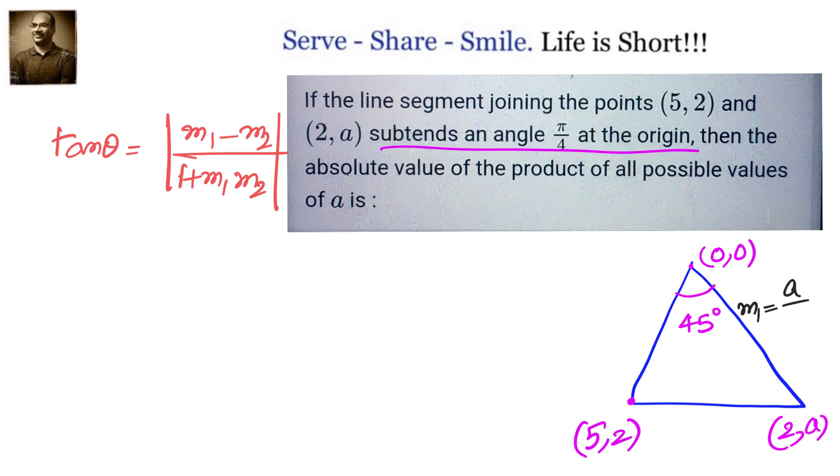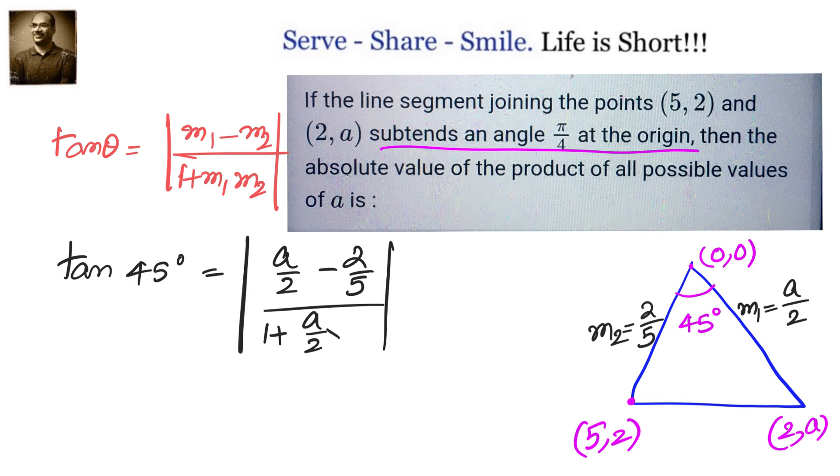We know m1 equals (a minus 0) by (2 minus 0), that is a/2, and m2 equals (2 minus 0) by (5 minus 0), that is 2/5. So tan θ equals (m1 minus m2) by (1 plus m1 m2), absolute value we have to take. Let us substitute tan 45 equals (a/2 minus 2/5) divided by (1 plus a/2 times 2/5).